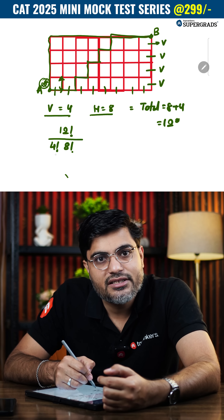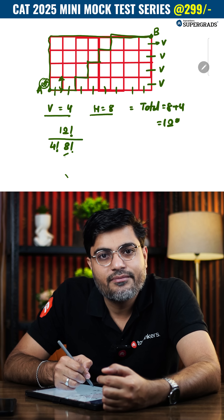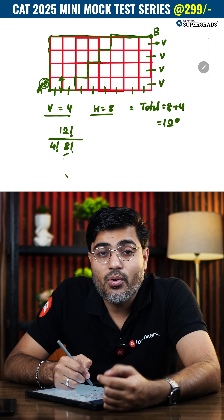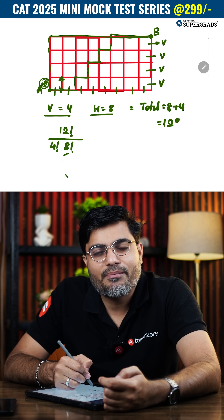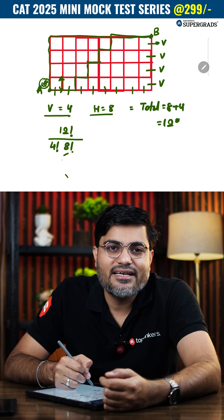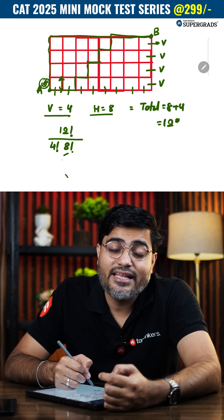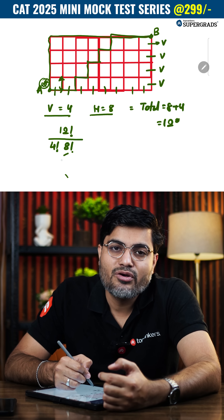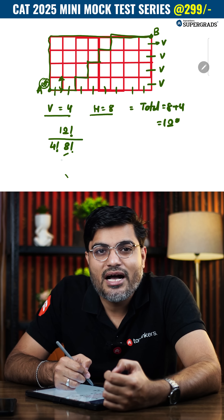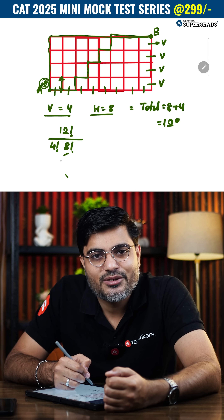It is similar to making a word using eight H's and four V's, so we divide by the repetition of V and repetition of H. Go ahead, keep applying this, and tell us in the comment section where you have used this. Thank you.